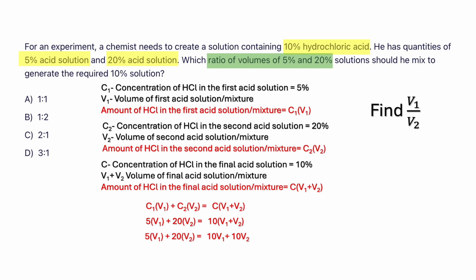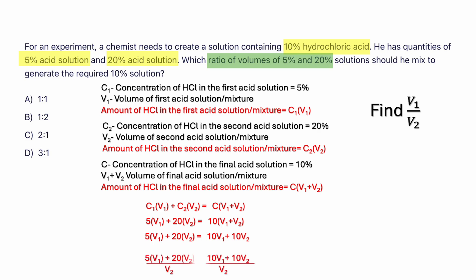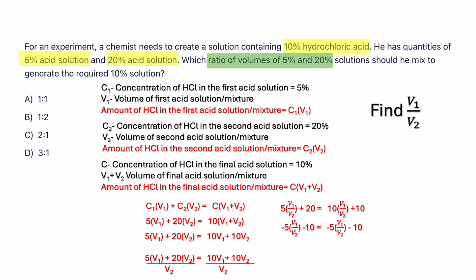We have a single equation with two variables V1 and V2, and we cannot find them individually using one equation. But we need to find V1 over V2, so let's use a trick: divide both sides by V2. Dividing each term by V2: 5·(V1/V2) + 20·(V2/V2) — V2 cancels — gives 20. On the other side: 10·(V1/V2) + 10 because V2 cancels. Now we have V1/V2 as our variable, which is exactly what we need to find.